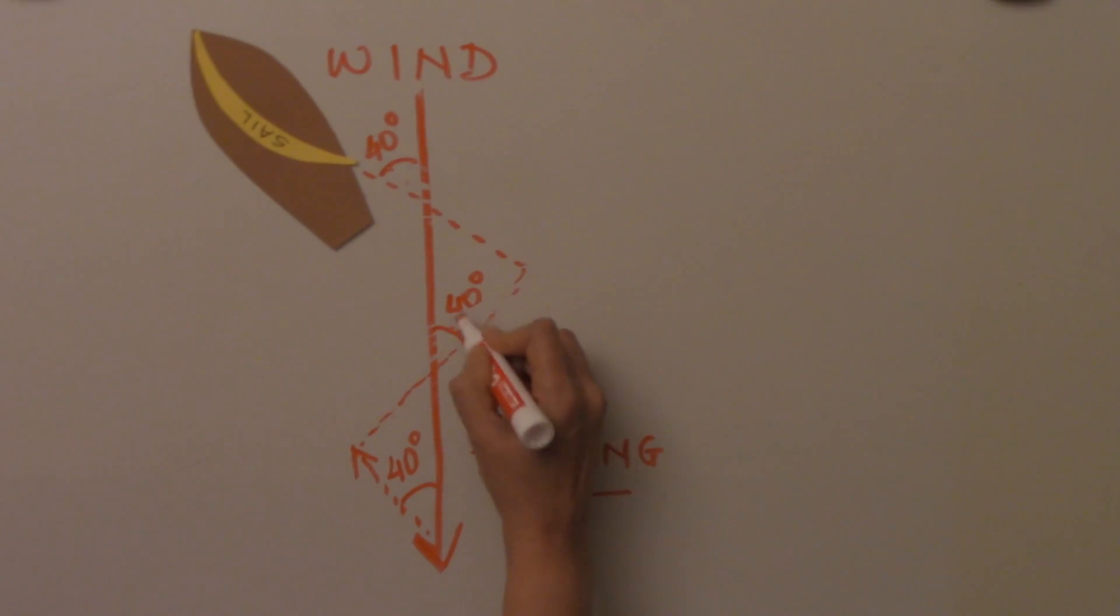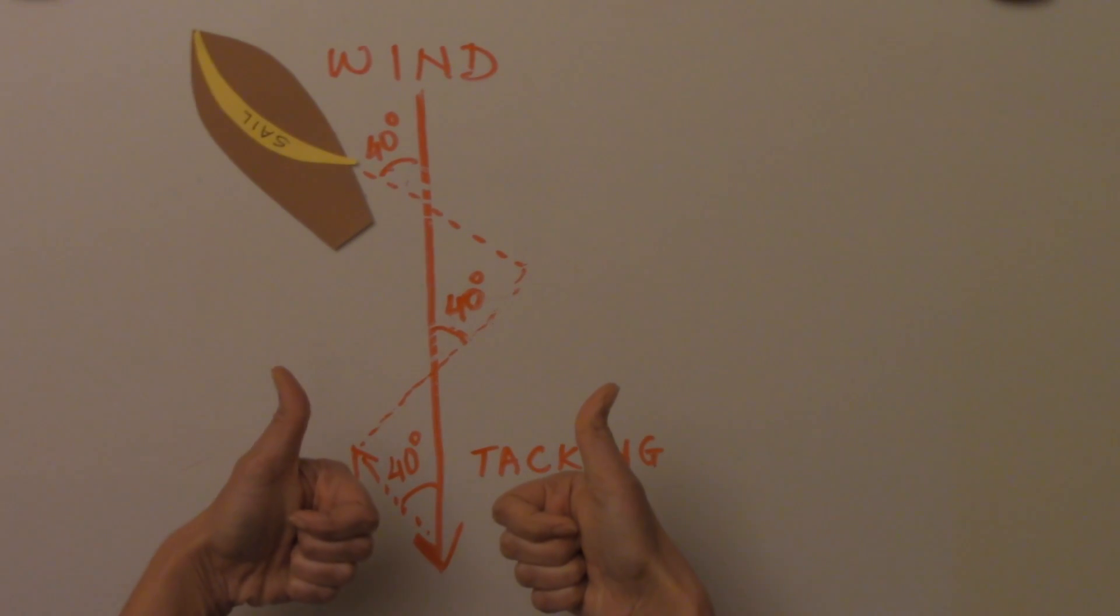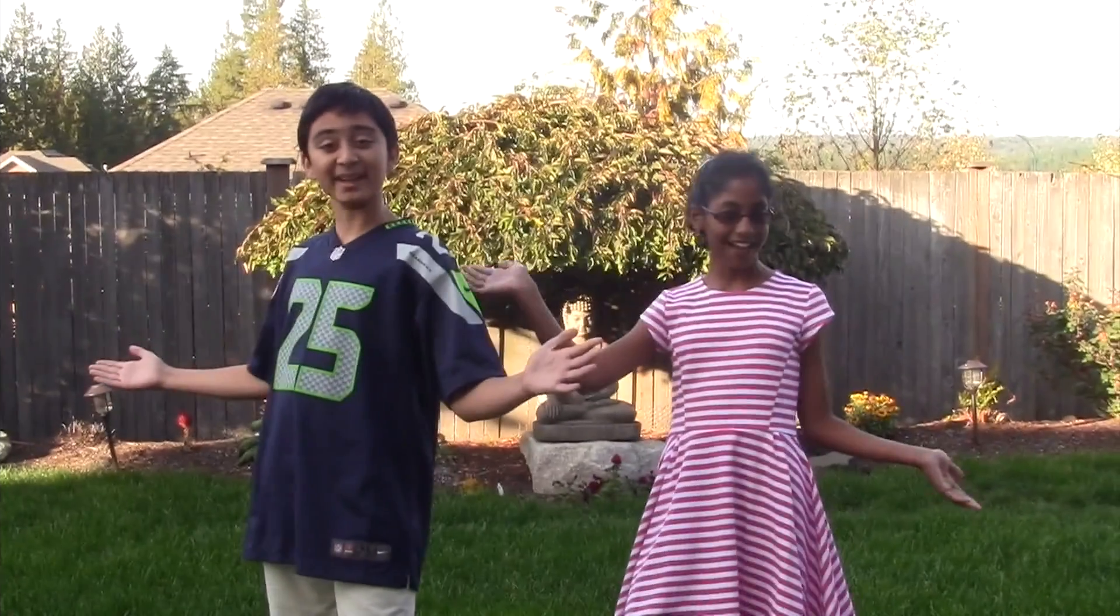Thanks to the Bernoulli principle, sailors can sail boats in any direction and airplanes are able to fly. The world would be far behind from where it is today if the Bernoulli principle had not been used in these ways. And we are done!